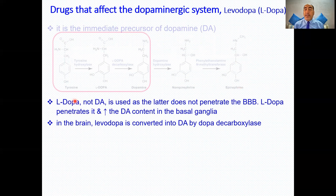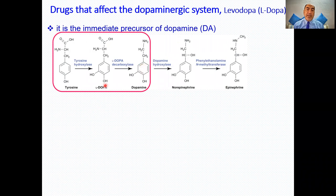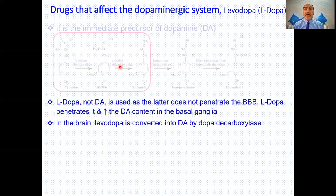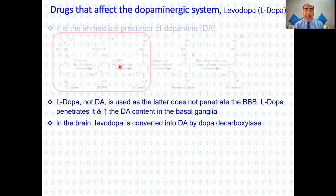The question is: why not use dopamine itself? The deficiency is in dopamine in the substantia nigra and basal ganglia. If we take dopamine orally, it cannot pass through the blood-brain barrier. But levodopa, because it is highly similar to tyrosine, can trick the L-amino acid transporter in the blood-brain barrier — it essentially says 'I'm tyrosine, let me pass.' That is why levodopa is used instead of dopamine.